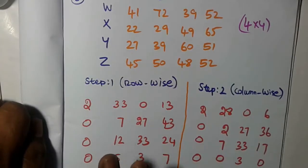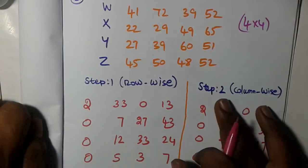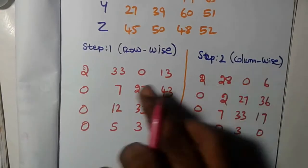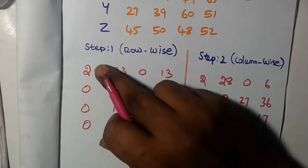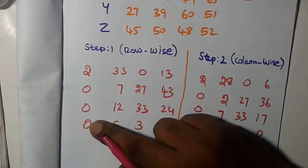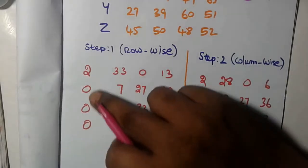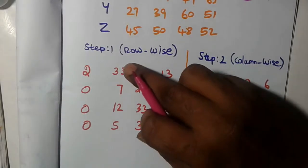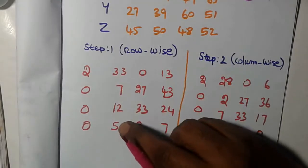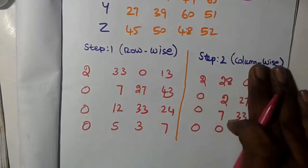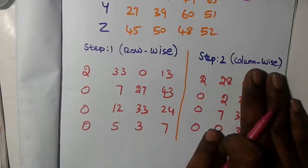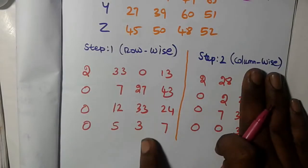After finishing Step 1, go to Step 2, which is column-wise reduction. In the first column, the smallest number is zero, so subtracting zero leaves that column unchanged. Move to the second column — the smallest number is 5. Subtract 5 from each entry: 28 minus 5 gives the results, with 7 and 0 obtained.